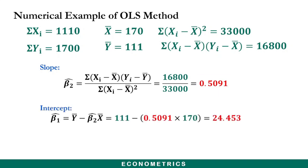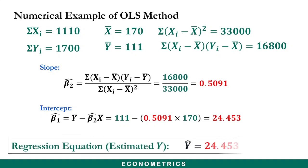We also use the formula for calculating the intercept coefficient. We substitute the mean of y minus the slope coefficient 0.5091 multiplied by the mean of x, 170, and we get 24.453. Using the estimated slope and intercept, we write the regression equation: y-hat equals 24.453 plus 0.5091x.